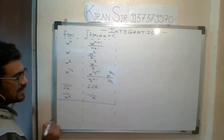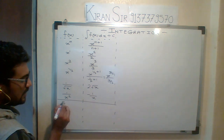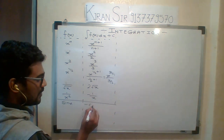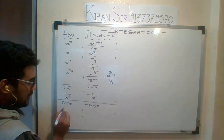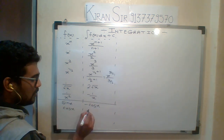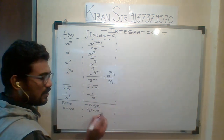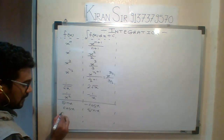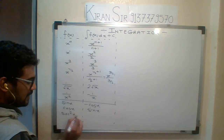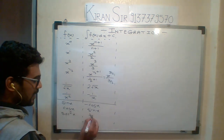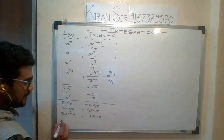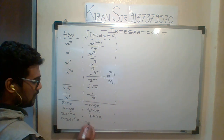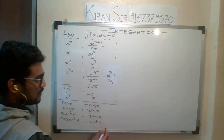Now the next section is trigonometric functions. Integration of sin x is minus cos x. Integration of cos x is sin x. Integration of sec squared x is tan x. Integration of cosec squared x is minus cot x.